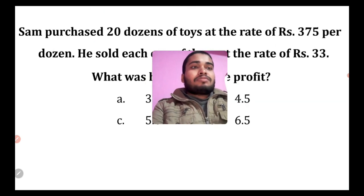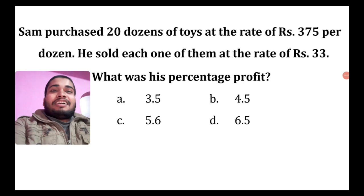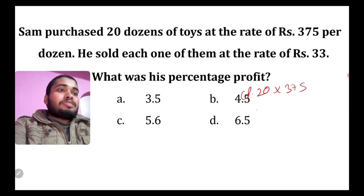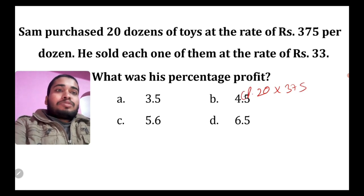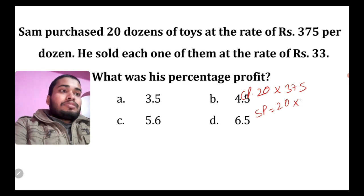Next, let's come to question number 3. Sam purchased 20 dozens at the rate of 375 per dozen. So CP becomes that much. And he sold each one of them at the rate of 33. So SP will be 20 into 12 into 33.